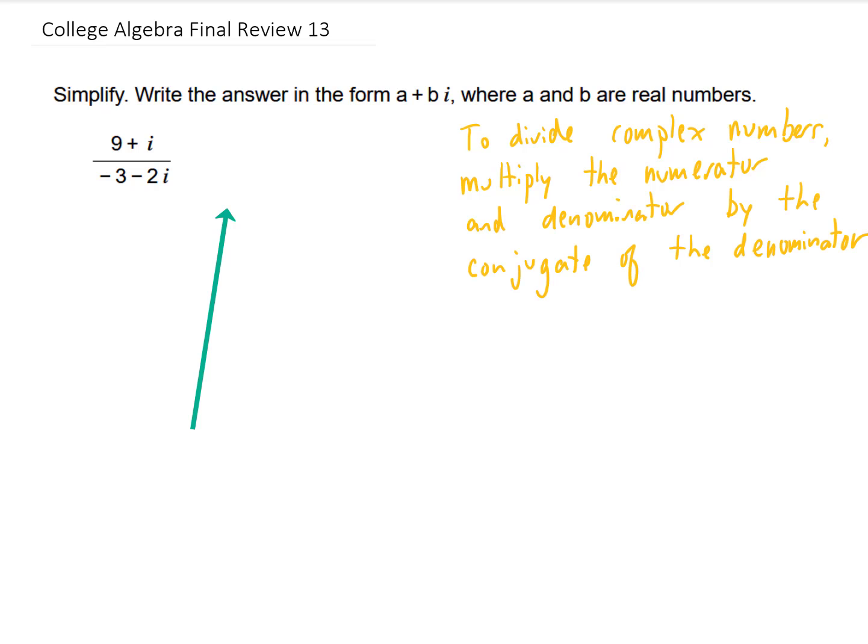We're going to take the conjugate of the denominator, and in this case, that is negative 3 plus 2i. And we're going to multiply both the numerator and the denominator by that negative 3 plus 2i. That is going to require that we FOIL out both the numerator and the denominator. So let's do it.